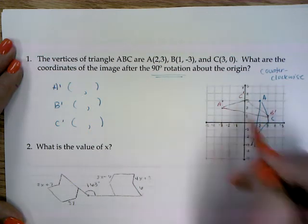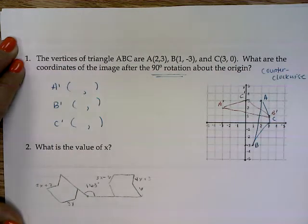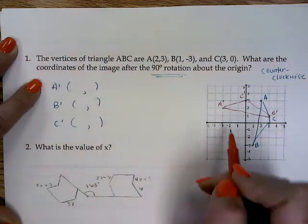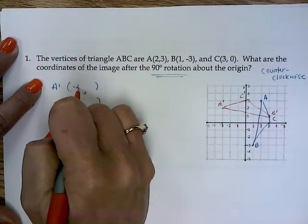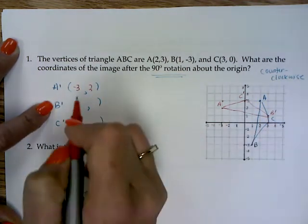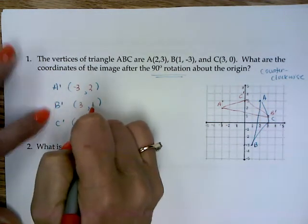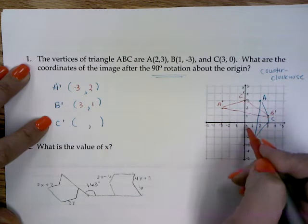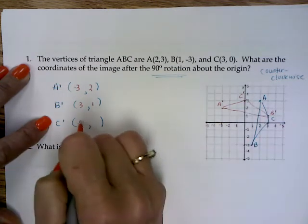Now again, this question does not ask us for the picture. It asks us for the ordered pair. So that's negative three, two. That's three, one. And C is zero, three.